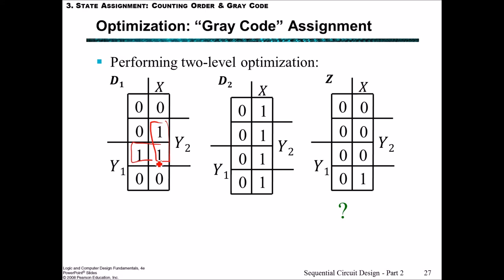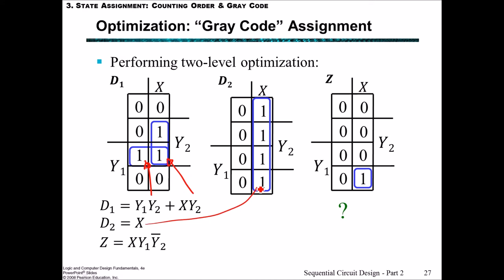And now the answer is to draw a rectangle around here and a rectangle around here, a rectangle around here and a single square around here. Then we transfer those to equations. For D1 we have y1 and y2 being this rectangle and then x and y2 being this second rectangle. For D2 it's easy, it's just whenever x is true then D2 is true. For Z it's the minterm where x is true, y1 is true and y2 is false. Giving us a total gate count of 1, 2, 3, 4, 5, 6.